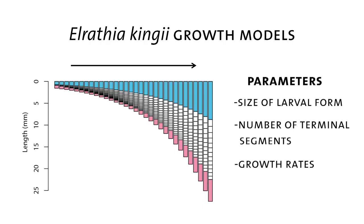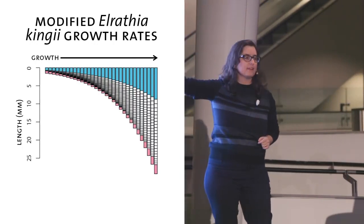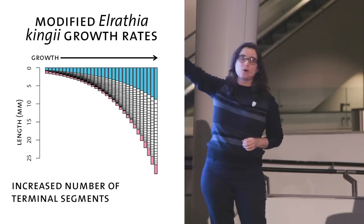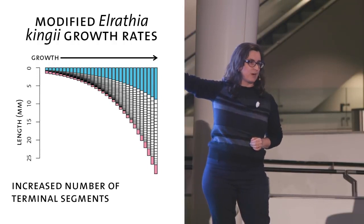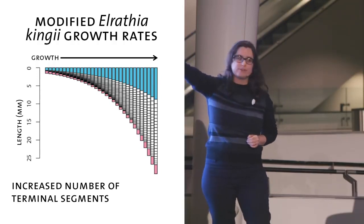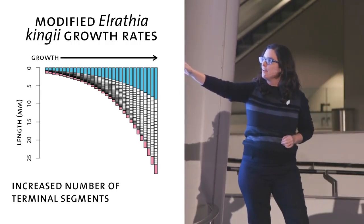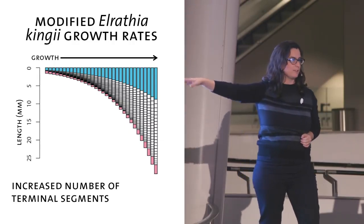Now that we have this model, what this means is that we can play around with those parameters and try to make trilobites of different sizes and different relative proportions. So here what I've done is the only thing I've changed in the model is to increase the number of terminal segments. So before Elrathia kingii, the real Elrathia kingii has 13 segments in the thorax. In the model over here, I've let the trilobite grow until it has 20 segments. You can see that the final trilobite gets bigger, not a lot bigger, but a little bigger over the same number of molts.